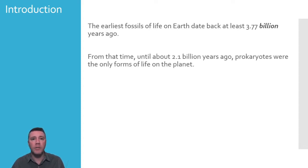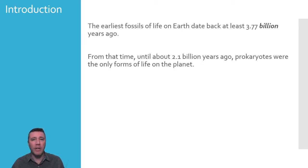Before eukaryotes, prokaryotes were the only forms of life on Earth for a very long time. The planet was theirs for nearly 2 billion years, and they evolved to occupy nearly every ecological niche in existence. Our brains have real difficulty comprehending such large numbers in relation to these vast expanses of time. Because of the perspective that our relatively short lifespans provide, our appreciation of time periods is limited to decades and centuries.